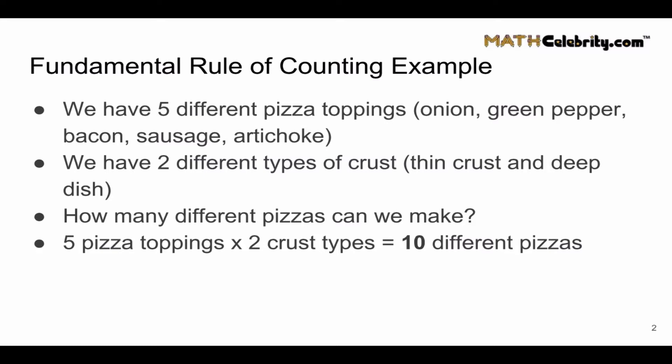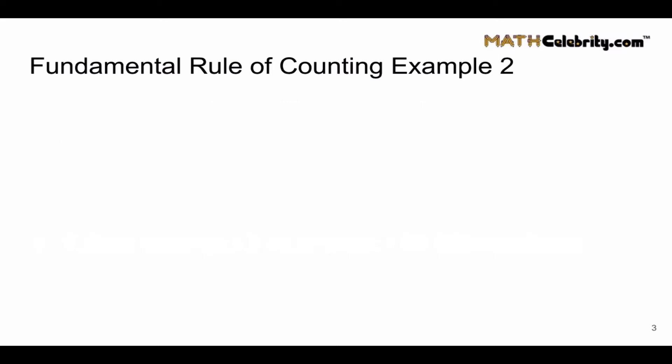And if you want to think about this, each different type of crust has five different toppings, so that's five plus five is 10. There are a few ways to think about this, but the fastest way is you multiply each of the different types of inputs to get your total outcome.